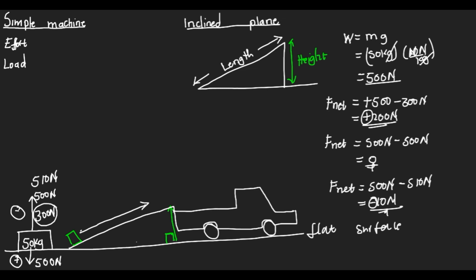What happens if we decide to push this box along the slanting surface? An inclined plane allows us to use a force of maybe 200 or 300 newtons — less than 500 — to move the box along the slant, compared to moving it directly against gravity. Since it allows us to apply a lesser force than we would need with our bare hands, the inclined plane is known as a machine because it makes our work easy by allowing us to apply less effort to overcome a huge load.